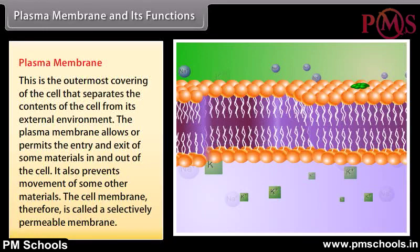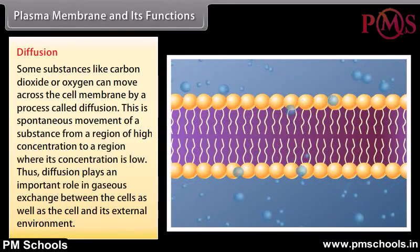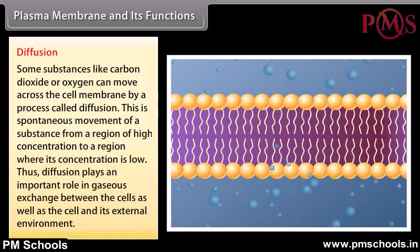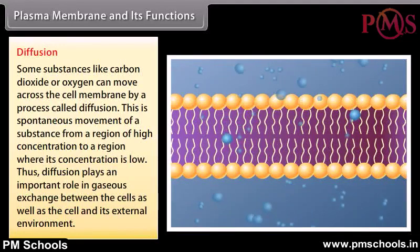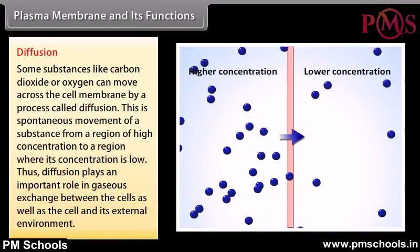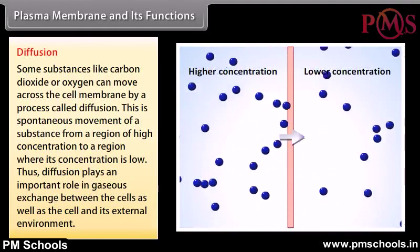The plasma membrane allows or permits the entry or exit of some materials in and out of the cell while preventing others, making it a selectively permeable membrane. Substances like carbon dioxide or oxygen can move across the cell membrane by a process called diffusion — the spontaneous movement of a substance from a region of high concentration to a region of low concentration. Diffusion plays an important role in gaseous exchange between cells and their external environment.